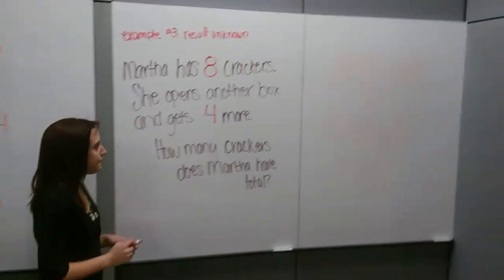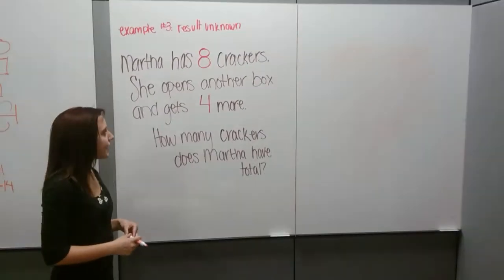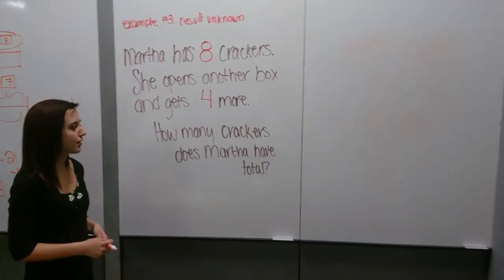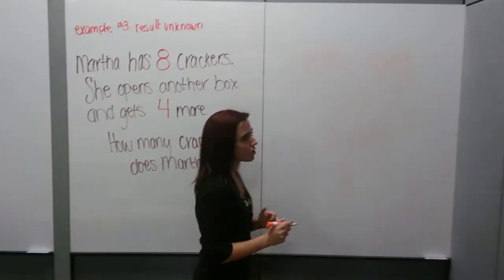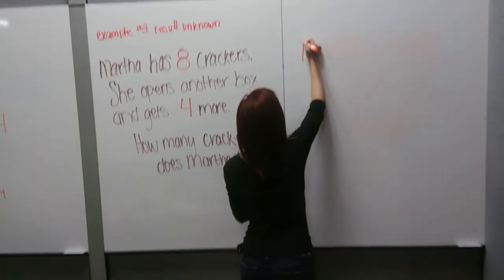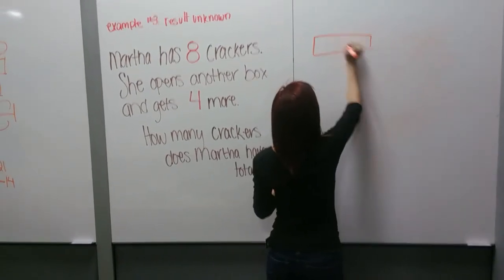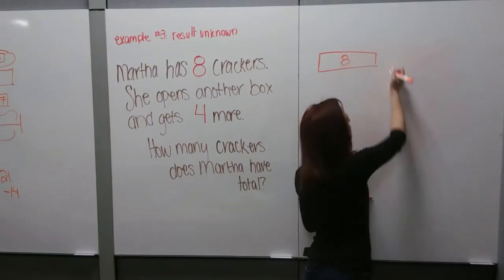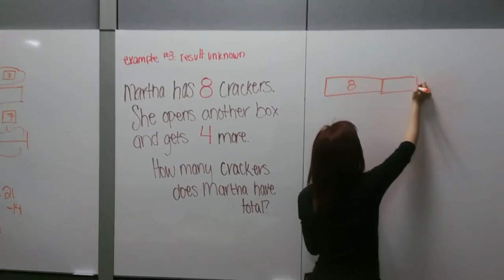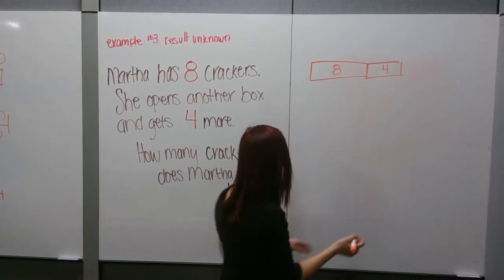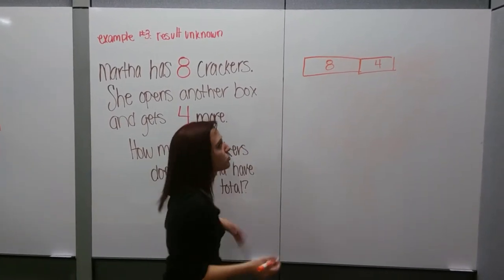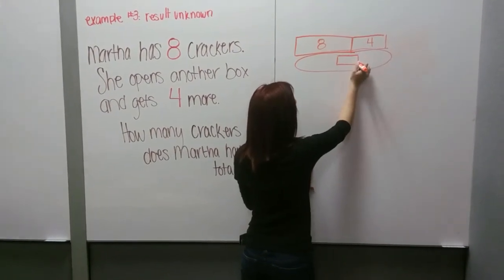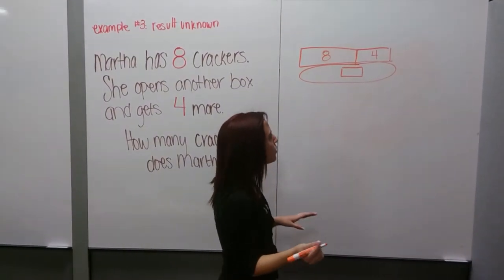Example 3 is Result Unknown. Martha has 8 crackers. She opens another box and gets 4 more. How many crackers does Martha have total? For our strip diagram, we put the number she starts with, which is 8. Then she gets 4 more, so we add another box with 4. And then how many does she have total? We don't know, so we put a circle with a box inside to represent our unknown.